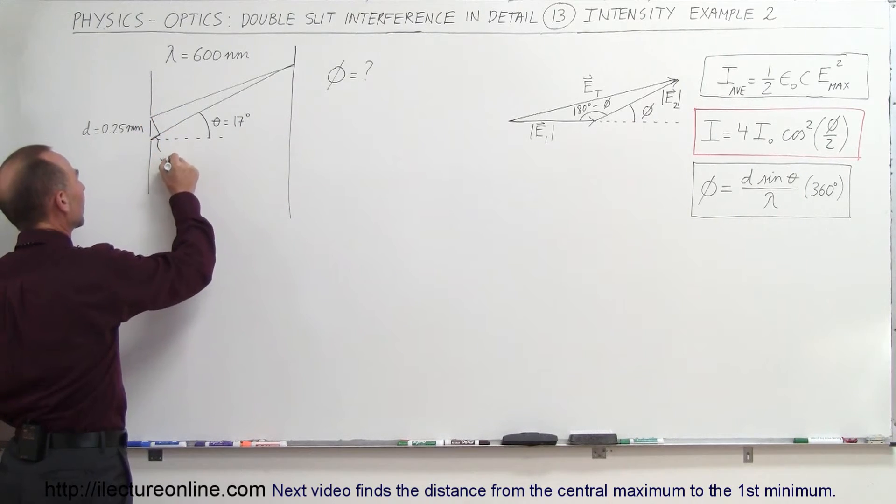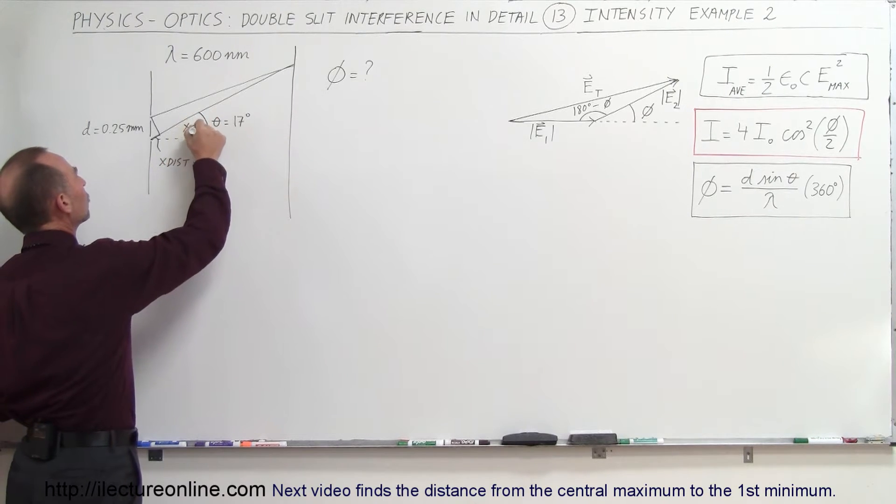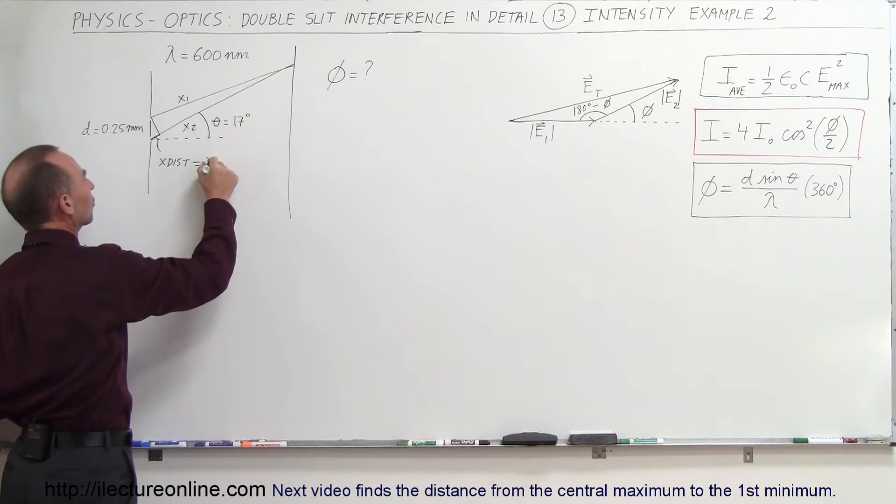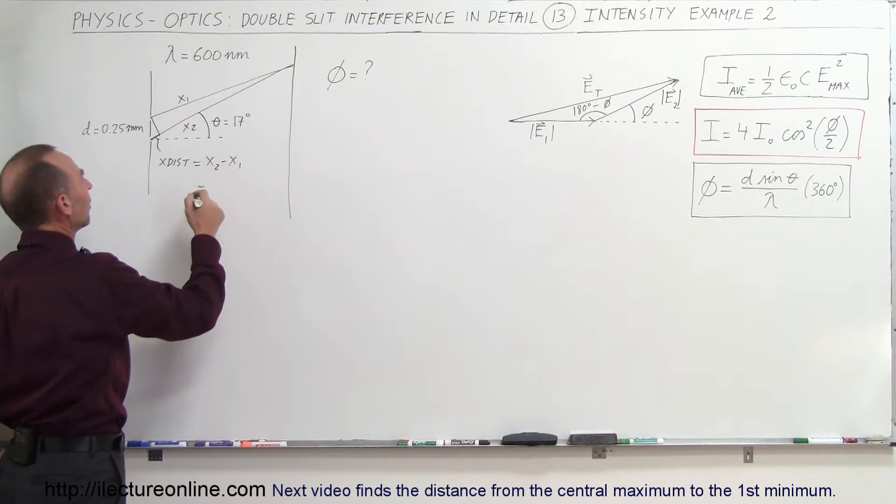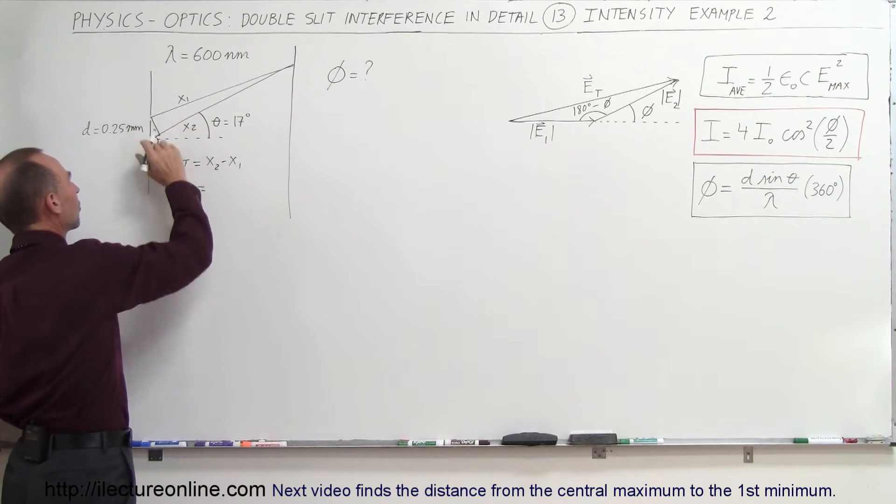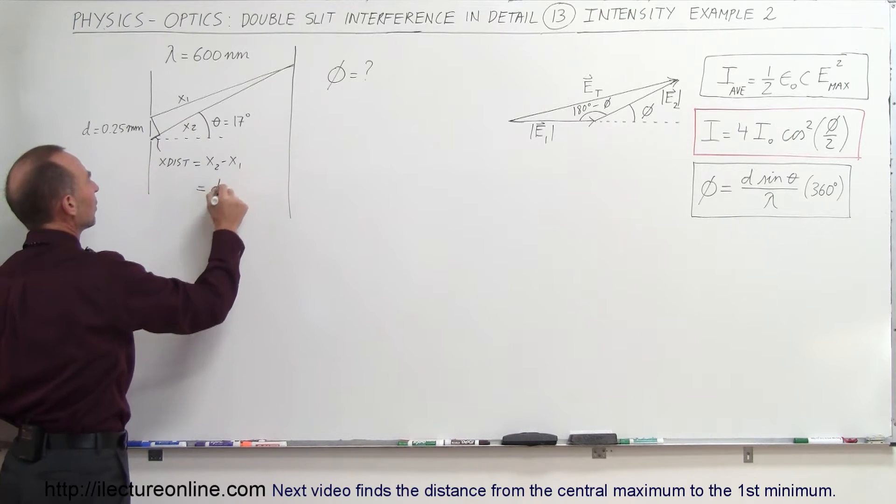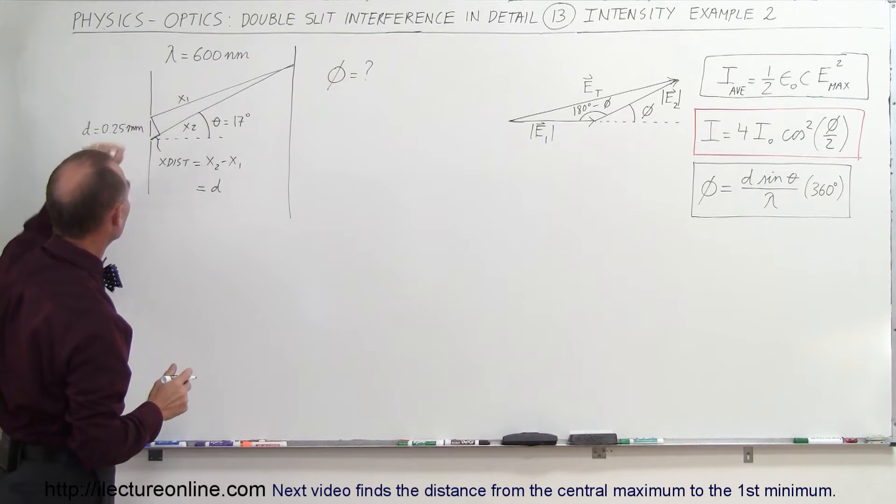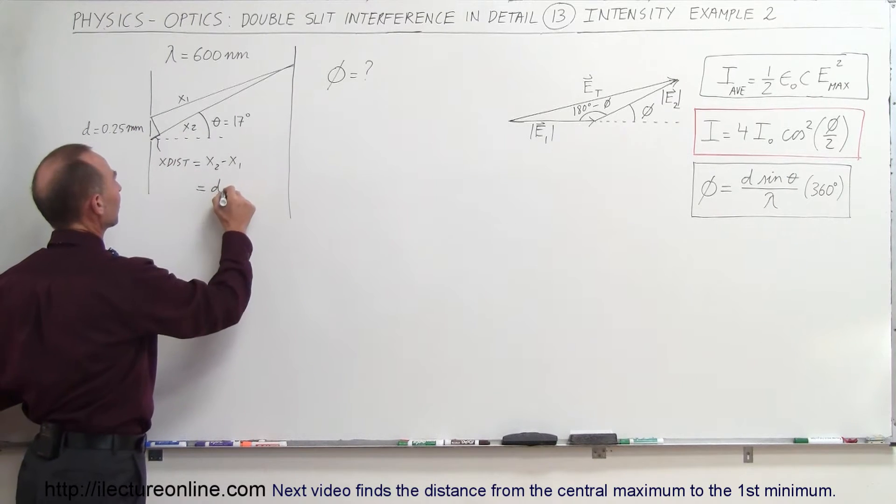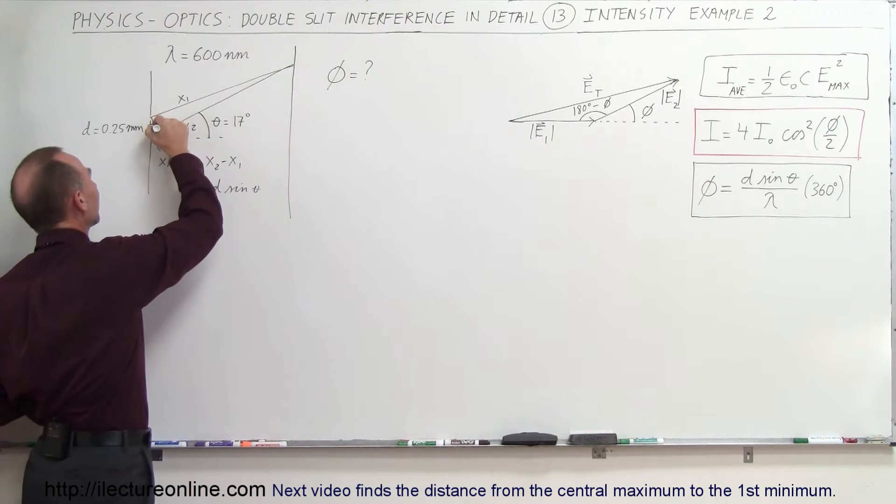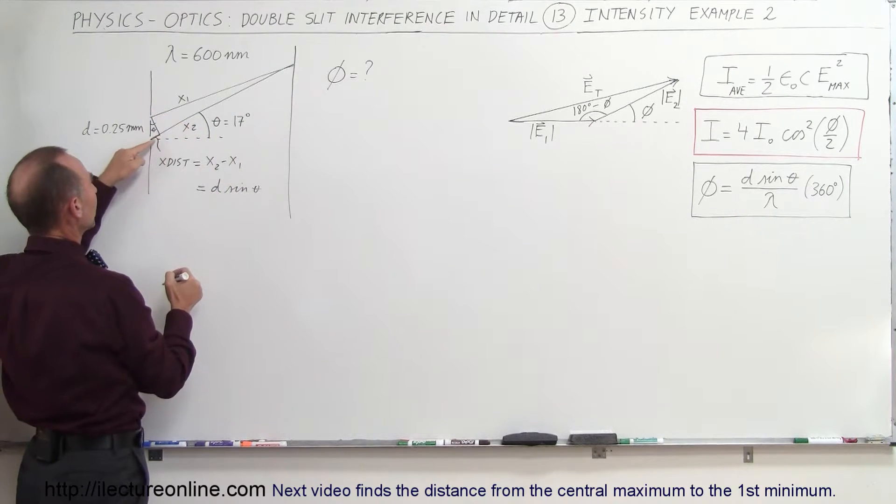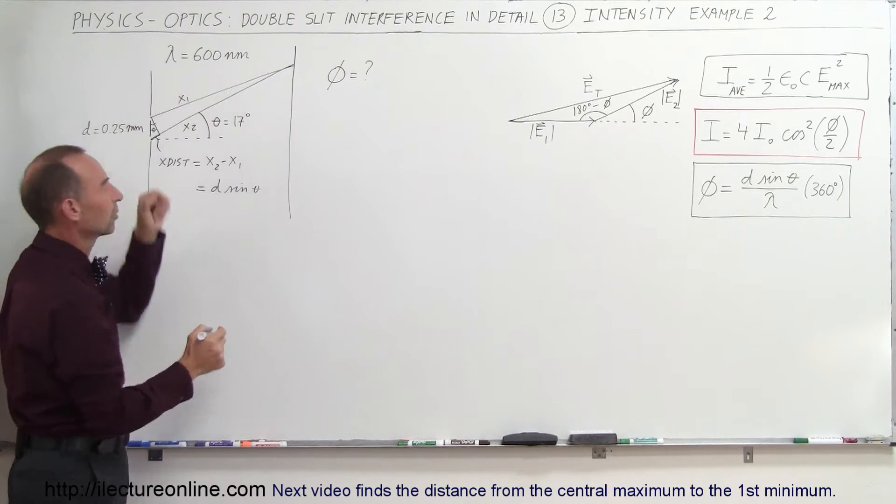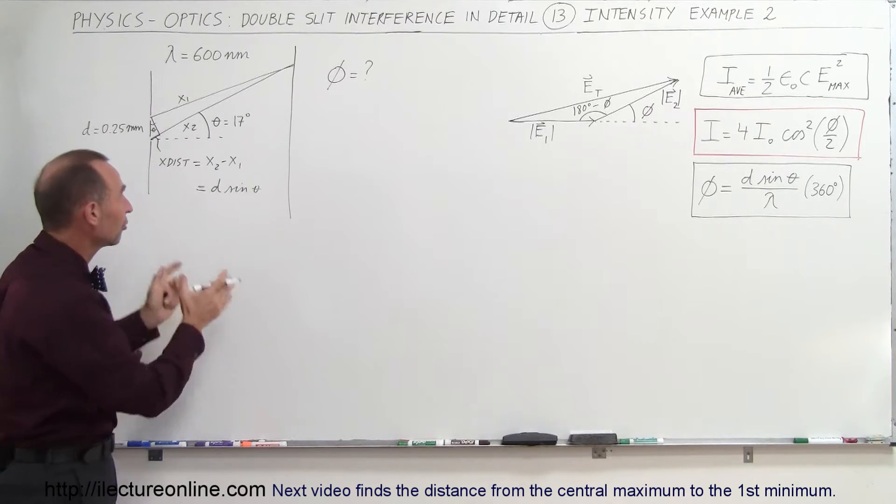We can realize that the extra distance traveled by the ray at the bottom, this distance right here, which is simply equal to x2 minus x1, can be found by taking the hypotenuse of this little triangle here, which is equal to the distance between the two slits, the separation distance, and we multiply it times the sine of theta. This theta right here is the same as this theta right there, so this is the extra distance traveled by the bottom ray compared to the top ray, and that extra distance causes a phase difference.